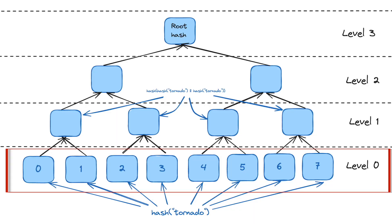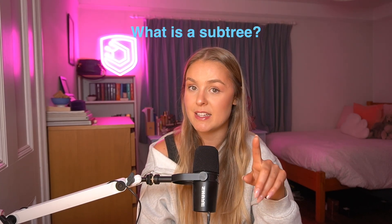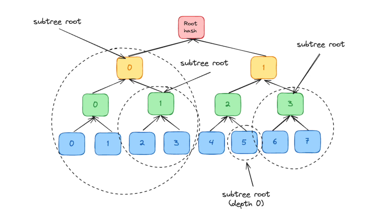Let's consider a tree of depth three, which of course has eight leaves. Initially we populate every leaf node with the constant value — for example the string 'tornado'. A subtree is any node and its descendants within the main tree, which can be considered a Merkle tree in its own right. Every single node in the tree can be considered the root of its own subtree; even a single leaf node can be considered a Merkle tree of depth zero. When we store these zero intermediate nodes, in practice we are storing subtrees of every depth up to the depth of the main Merkle tree.